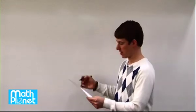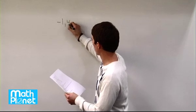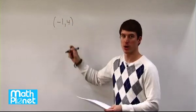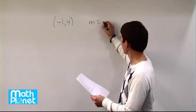Here we want to find the equation of a line if we know that it goes through the point negative 1, 4. So our x is negative 1, our y is 4 for some point on the line, and we know that the slope m equals negative 1.